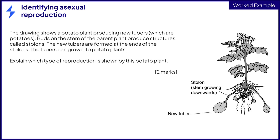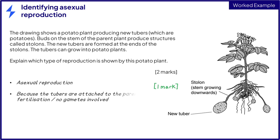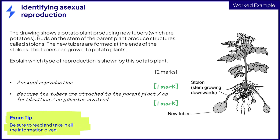We can see in the image that the tubers are attached to the parent plant by structures called stolons. We are told that the tubers can grow into new potato plants. All this information tells us that asexual reproduction must be taking place, because the tubers are grown from the parent plant. Even though a flower is present, there is no information about pollen or pollination, so there's no sexual reproduction or fertilisation taking place. Be sure to read and take in all the information given in a question like this.